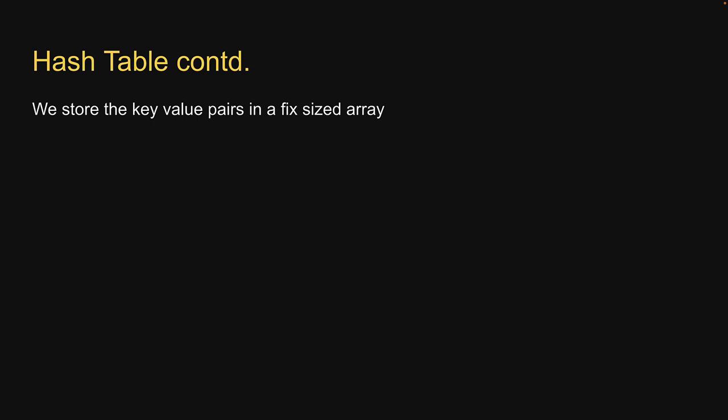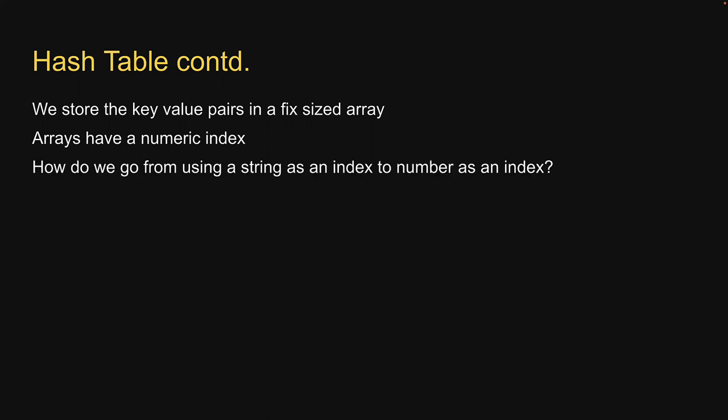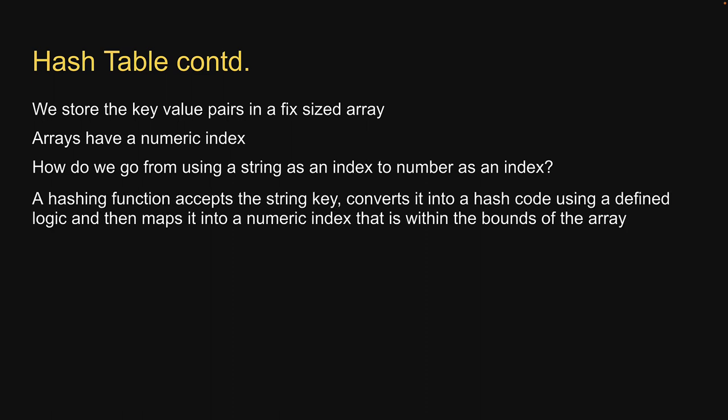But we know that arrays have a numeric index. How do we go from using a string as an index to number as an index? This is where a function called the hashing function comes into picture.